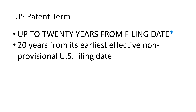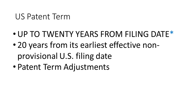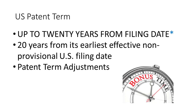So if the patent claims priority to a provisional application or a foreign patent application, we don't count that when it comes to starting the clock. A patent term adjustment is something that the U.S. Patent Office may grant in circumstances where there was an excessive delay in the examination process. In such cases, the U.S. Patent Office may provide — to use soccer parlance — some bonus time.